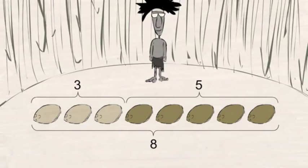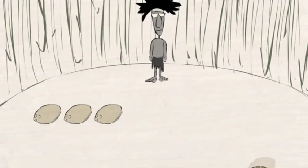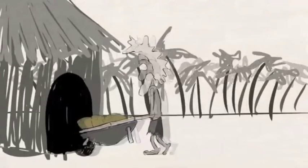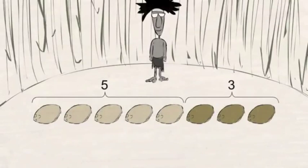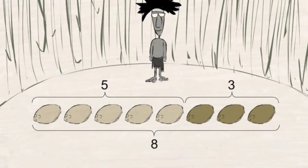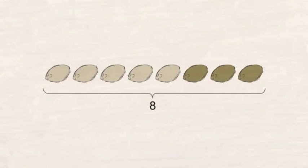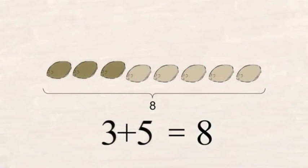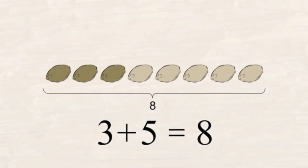Interestingly, if you start out with five coconuts and then your neighbor gives you three more, you will also have eight coconuts. For some reason, five plus three gives you the same answer as three plus five.